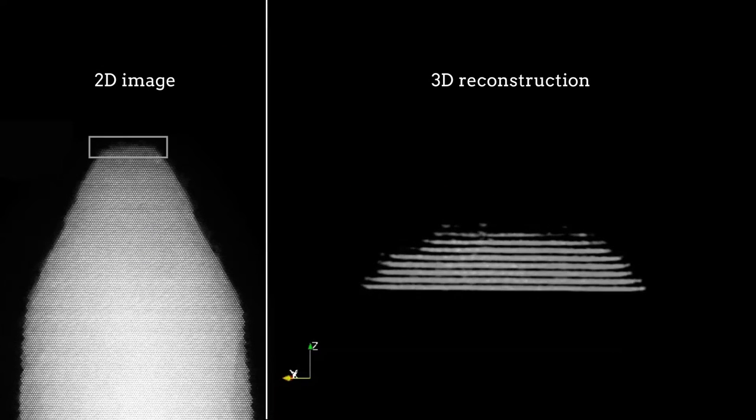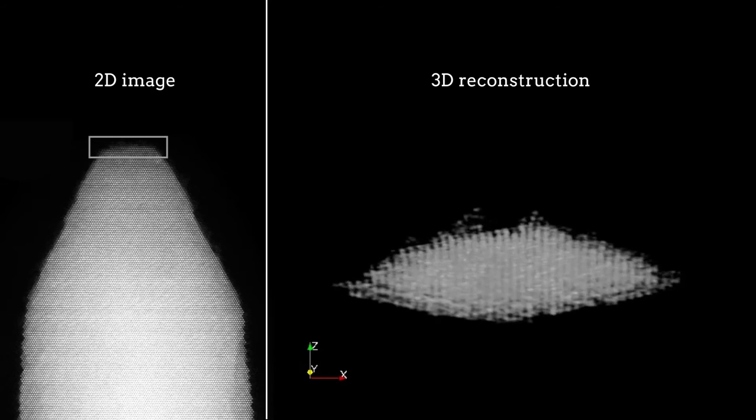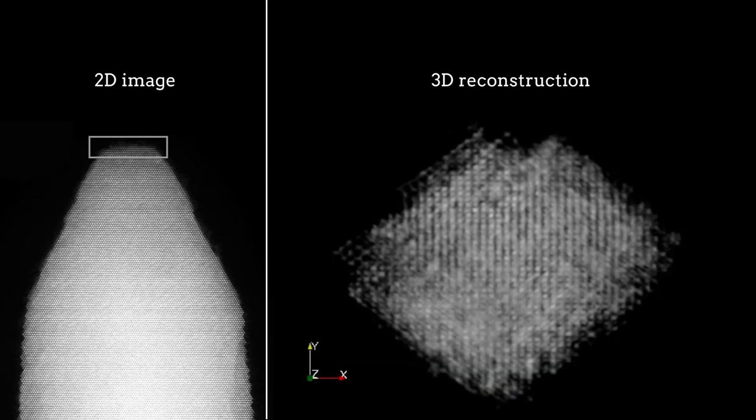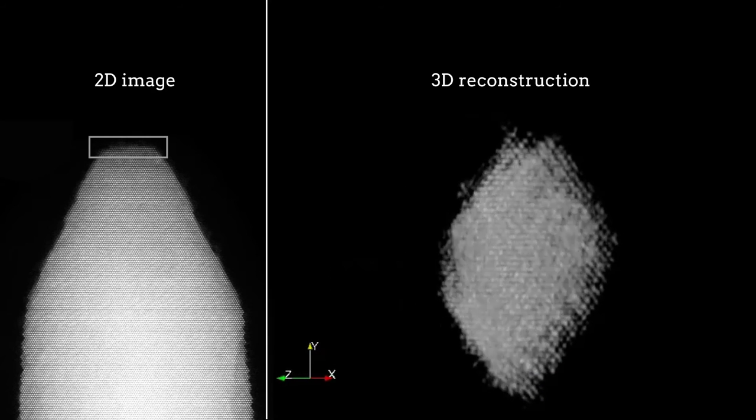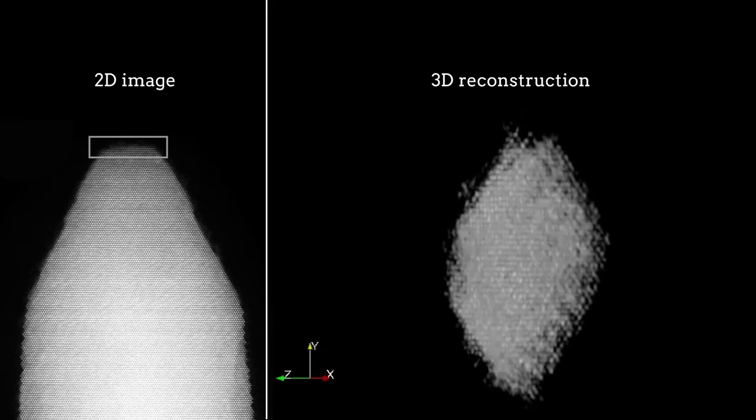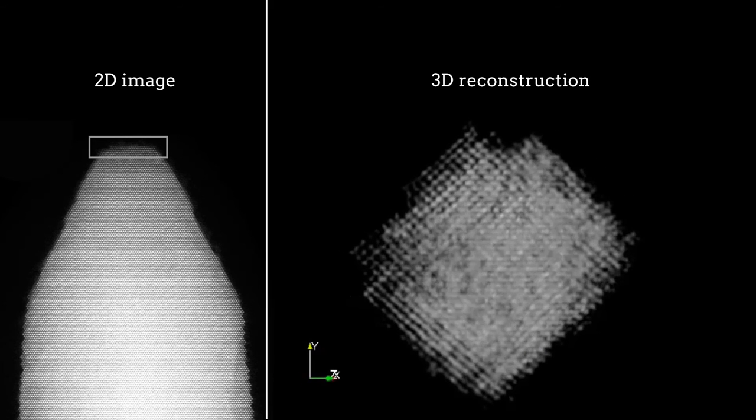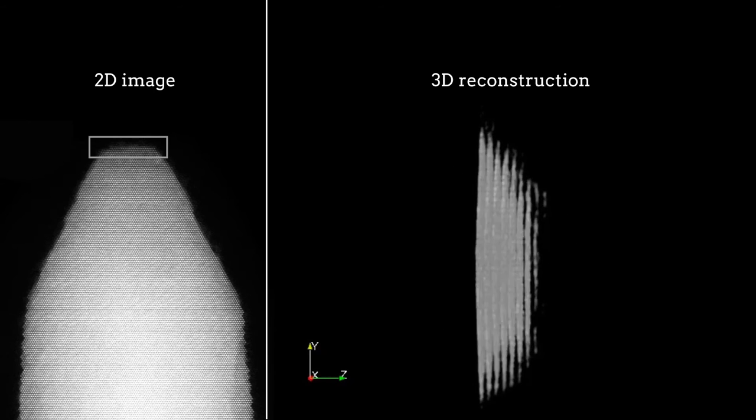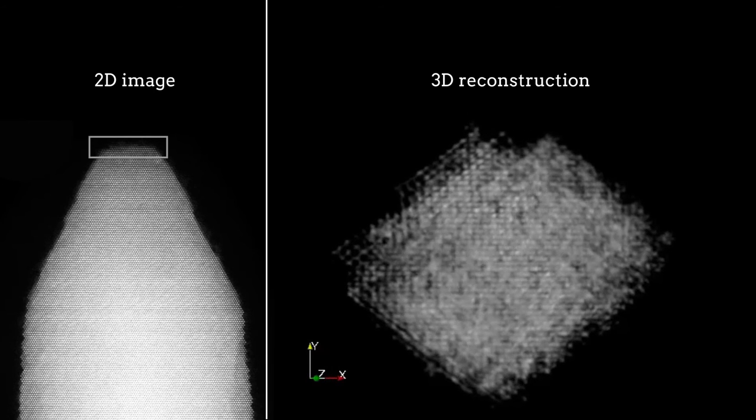This capability transcends the limitations of traditional electron microscopy because it allows individual atoms in an object to be accounted for in three dimensions. The resulting images therefore provide a more complete picture of how atoms are arranged in real samples than the traditional electron microscopy images currently found in textbooks.